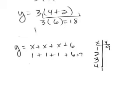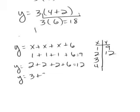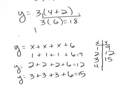And then if 2 were x, it would be 2 plus 2 plus 2 plus 6. That's 2, 4, 6, plus 6 is 12. And if 3 were x it would be 3 plus 3 plus 3 plus 3 plus 6. That's 3, 6, 9, plus 6 would be 15.